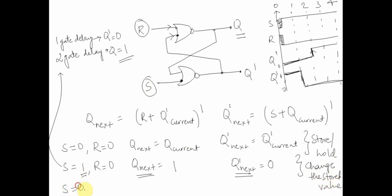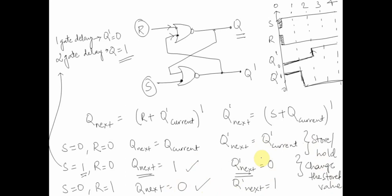The same logic applies when S equals zero and R equals one. When R is one, Q_next becomes equal to zero and Q_bar_next becomes equal to one. Q_next is reflected after one gate delay and Q_bar_next after two gate delays. We are able to change the stored value — setting the circuit when S is one and resetting it when R is one.